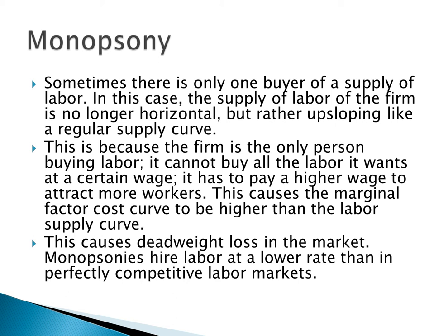Normally a firm is too small to hire a significant number of workers and can hire as many as it wants at the market rate. However, a monopsony hires a large number of workers relative to the market, and therefore needs to increase wages to attract more workers. This causes the firm's labor supply curve to be upsloping instead of horizontal. This causes the marginal factor cost curve to rise above the supply curve, because hiring new workers costs more than hiring the previous one — to hire more workers, they have to pay every single worker a higher wage. The monopsony also wants to maximize profits, so it will hire at MRP equals MFC, which will end up causing deadweight loss in the market.